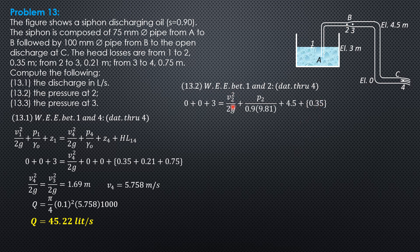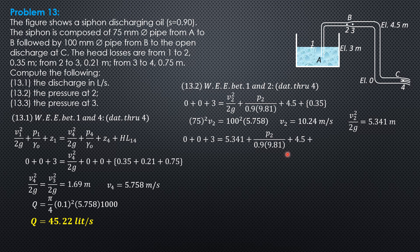Let's solve for velocity at 2. Diameter is 75mm. 75 squared times V2 equals 100 squared times 5.758. We do not consider π/4; it will be canceled. V2 is 10.24 meters per second, then square this value divided by 2g, which is 19.62. The velocity head at 2 is 5.341m. Substitute here: 0 plus 0 plus 3 equals 5.341 plus P2 over (0.9 times 9.81) plus 4.5 plus 0.35. From there, we can compute the pressure at 2 equal to -63.49 kilopascals.